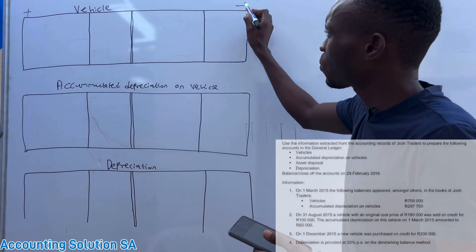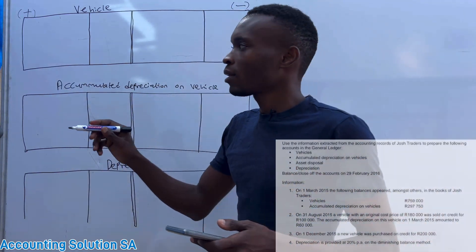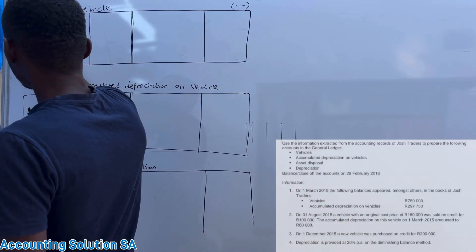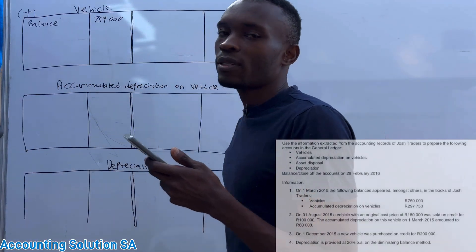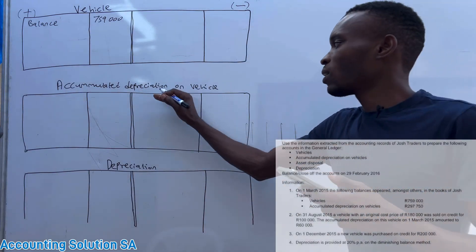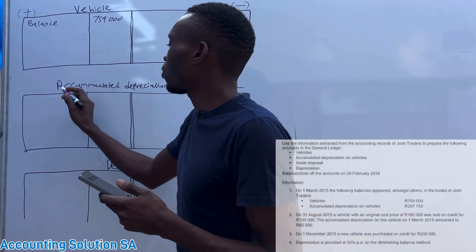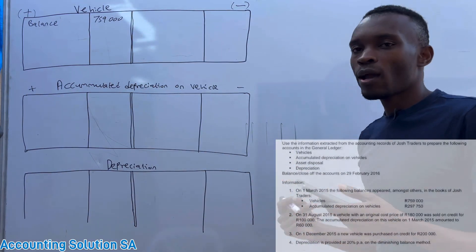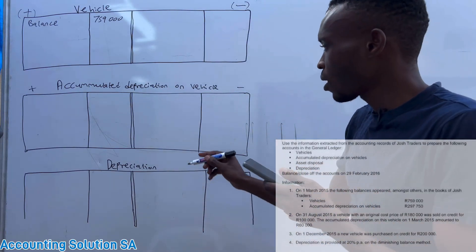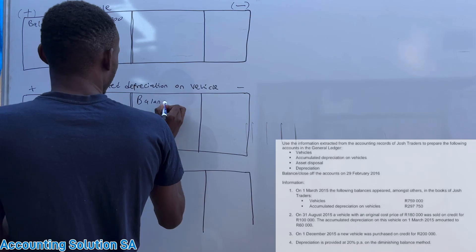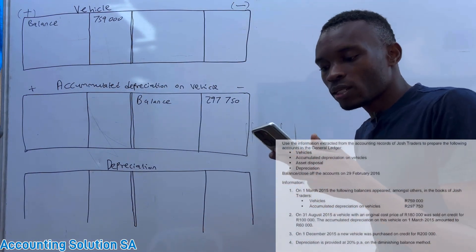When you buy a vehicle, record on the debit side. When you sell, record on the credit side. Vehicle coming in is a plus, vehicle going out is a minus. Our opening balance goes to the debit side — we're going to have a balance of 759,000. Then accumulated depreciation — we are talking about negative assets. Accumulated depreciation subtracts from assets because it reduces the value of the vehicle, so we record it on the credit side.